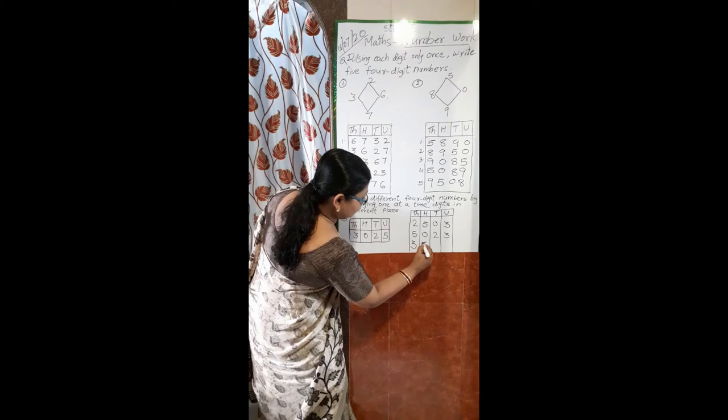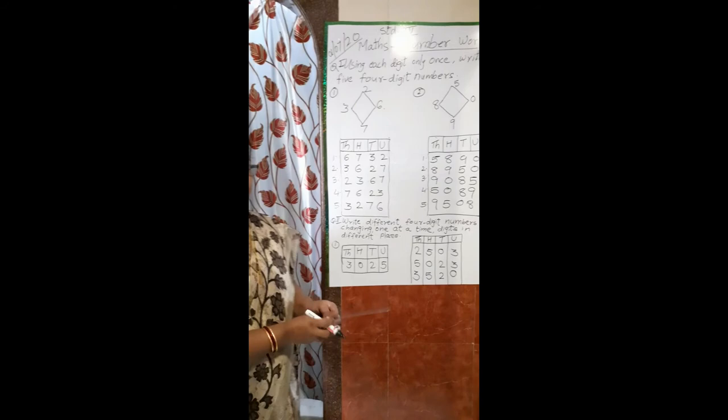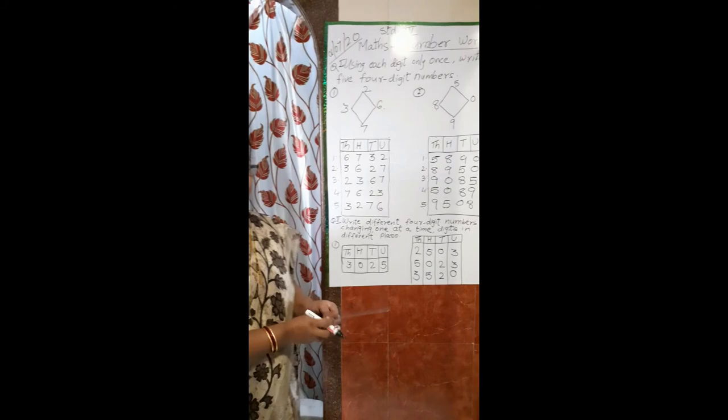Now take 3 in the thousands place, 5 in the hundreds place, 2 in the tens place, and 0 in the units place — the number is 3520, which is three thousand five hundred and twenty. I have used only these digits throughout. This is how we write and read four-digit numbers. Thank you.